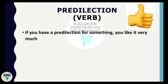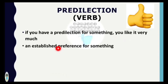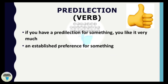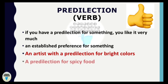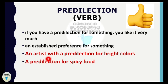The next word is 'predilection.' If you have a predilection for something, you like it very much — it means an established preference for something. For example: 'An artist with a predilection for bright colors,' or 'a predilection for spicy food.' Other words you can use in place of predilection are: liking and preference.